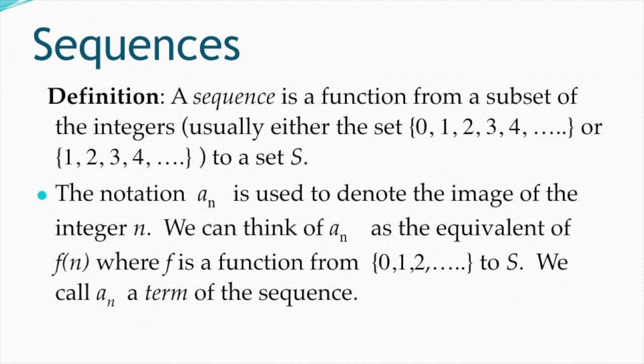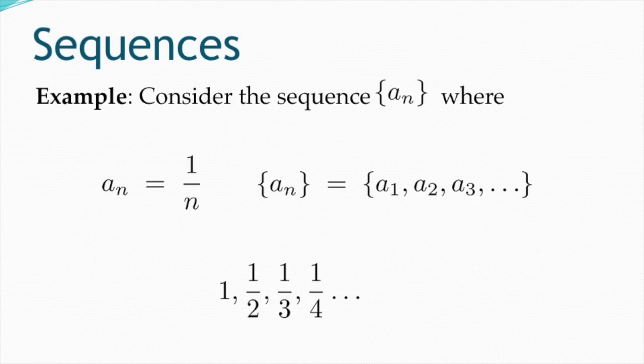The domain is a subset of integers, whether starting from 0, 1, 2, 3, 4 or 1, 2, 3, 4, mapping to a set S. The notation a subscript n is used to denote the image of the integer n. We can think of a(n) as a function f from the subset {0, 1, 2, ...} to S, and we call a(n) a term of the sequence.